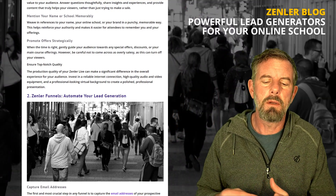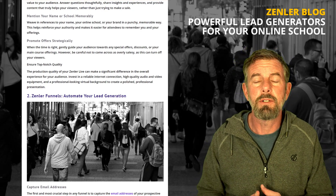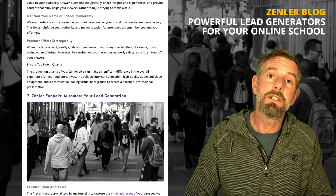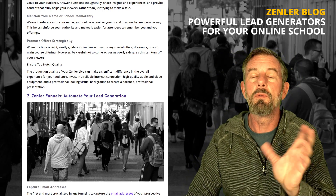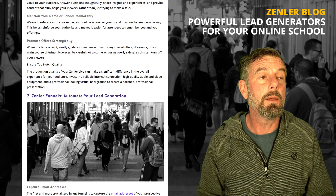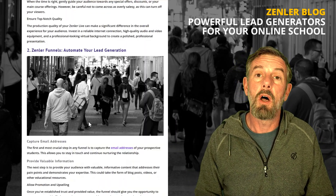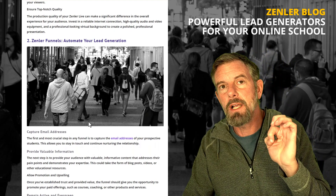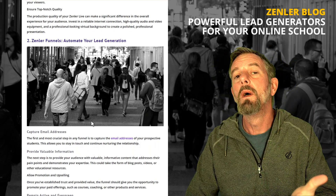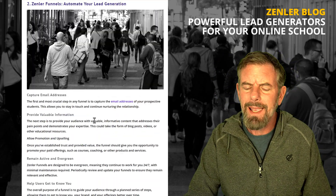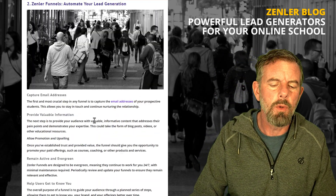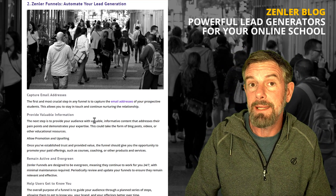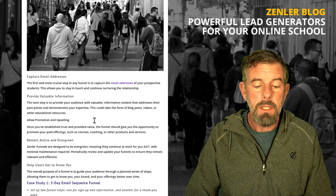Point number two is funnels. Automating your lead generation with funnels is very powerful. You get people to opt in, you send them a series of emails, and you take them through a sequence. You might give them a giveaway, run a live workshop — there are many different ways. The key is you're capturing their email address, which provides a warming-up period before the eventual sale. You want to provide valuable information so people are enticed to give their name and email.